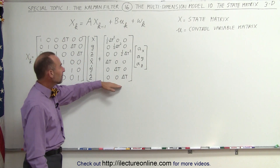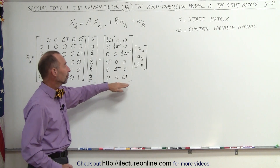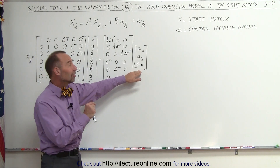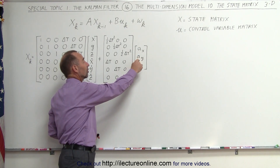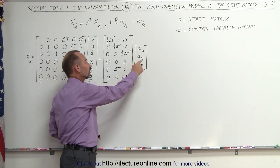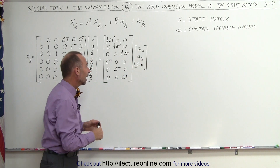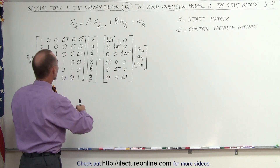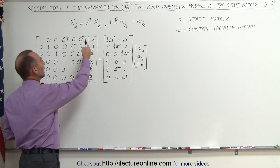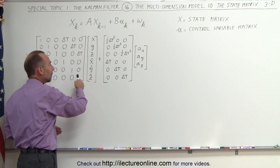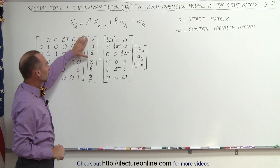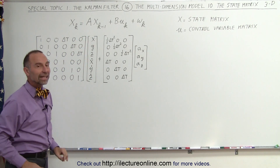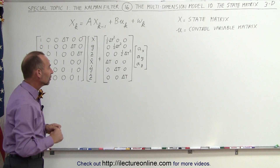Here we have our B matrix, which allows us to convert what we call control variables — in this case the acceleration in the x direction, the acceleration in the y direction, and the acceleration in the z direction — and convert that into a 6 by 1 matrix that will include the x, y, and z directions and the velocities in the x, y, and z directions.